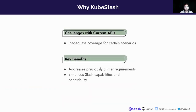Let's get started. As you may already know, we have an existing project Stash, which is a backup and recovery solution for Kubernetes workloads, databases, and applications. So why did we build KubeStash? As we engaged with an increasing number of Stash enterprise customers, we came across some intriguing scenarios that could not be addressed with our current APIs. So basically we had to rebuild, re-architect, and redesign our Stash project and introduce KubeStash.